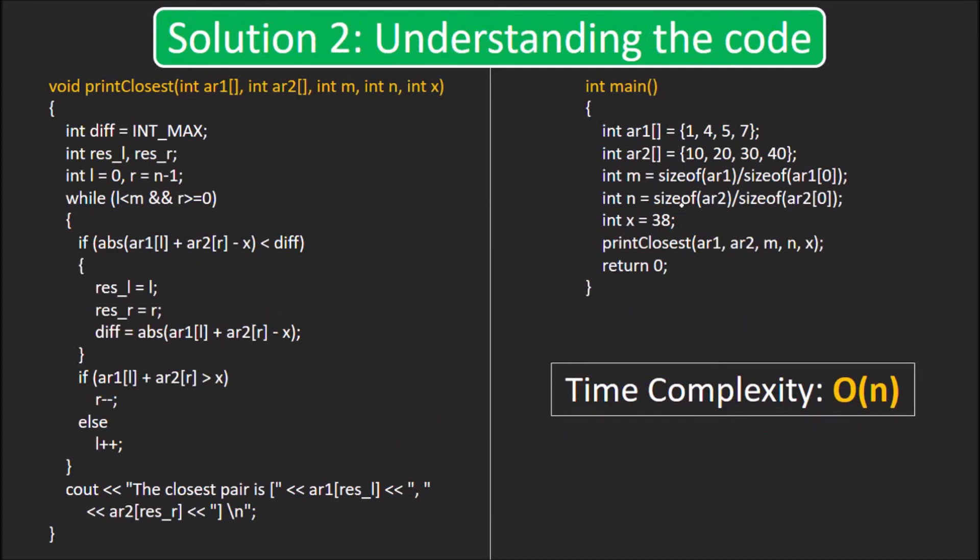Let's try to understand the code now. Having seen the algo and working already, this should be a piece of cake. The two arrays are initialized here and x stores the value to which we must find the pair with closest sum. Call the function print closest. Diff is infinite at the start. The two result variables will store the elements whose sum is closest to x. L and r are positioned at the beginning of ar1 and at the end of ar2 respectively. The loop runs while l is less than the size of array 1 and r hasn't reached the start of array 2.